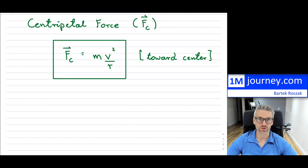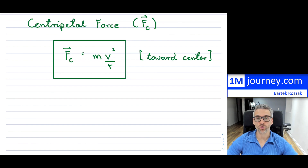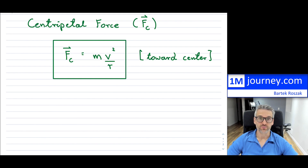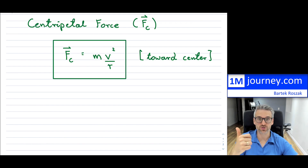There is one huge assumption we make with centripetal force. When you're moving, you're not always going at a constant speed. But in centripetal force calculations, we assume you are moving at a constant speed. If you're moving at constant speed in a straight line, there really isn't any acceleration — that's nothing new. You can be speeding up or slowing down, but under those two circumstances you're basically in one dimension.